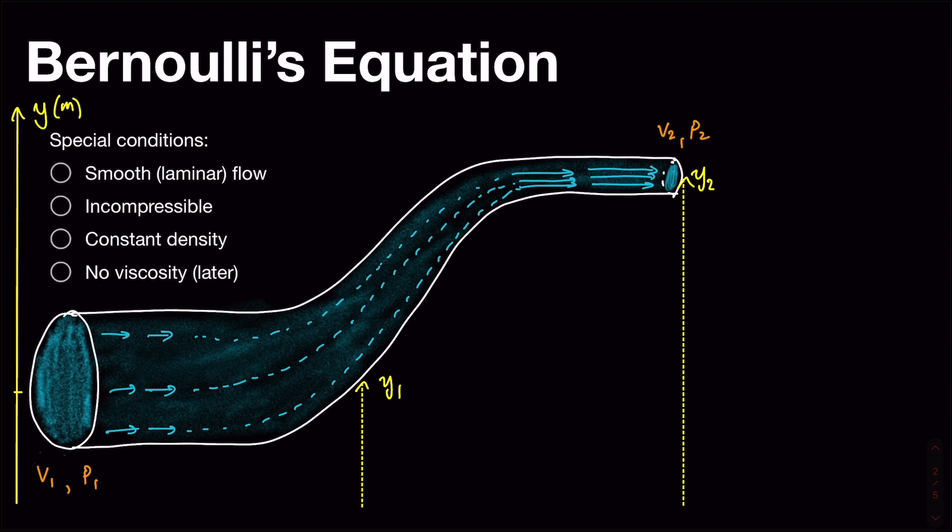We're going to assume that our fluid is incompressible, like water or most liquids. We're going to also assume that our fluid has a constant density. It's not getting denser and less dense at different places. And again, that's a pretty common assumption that holds in lots of cases.